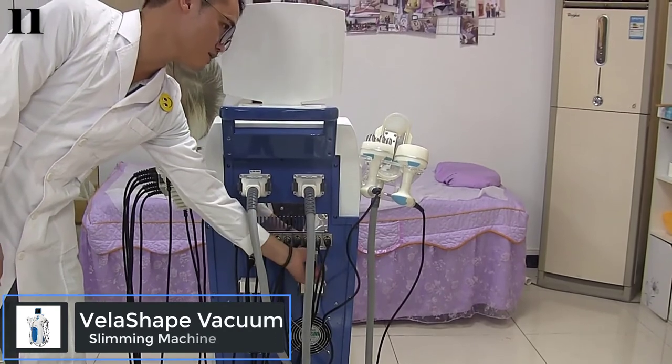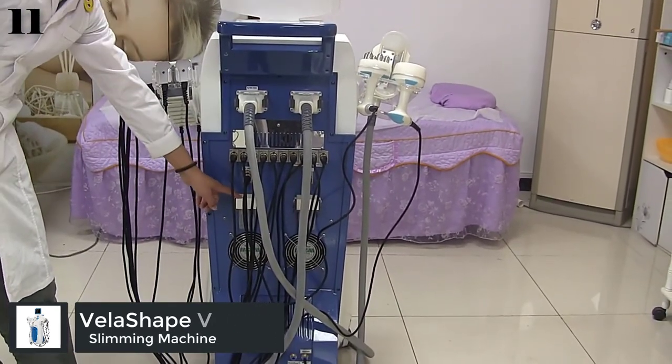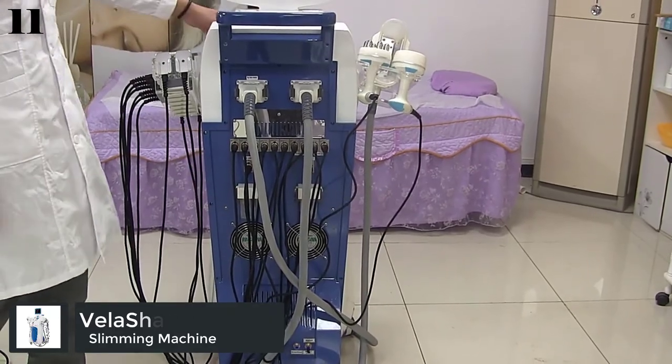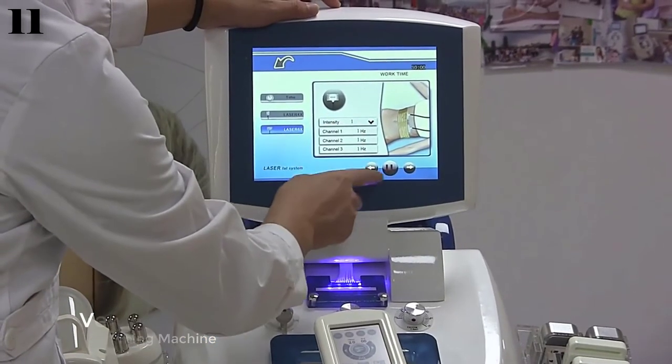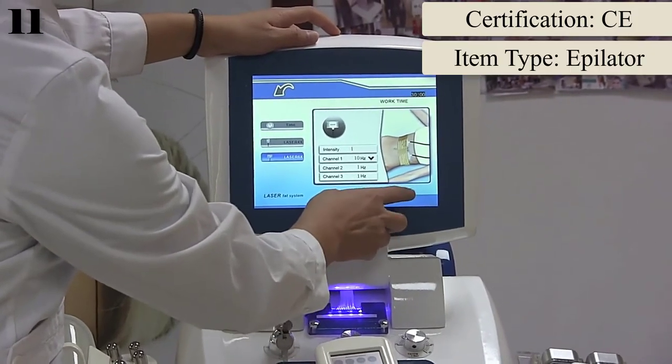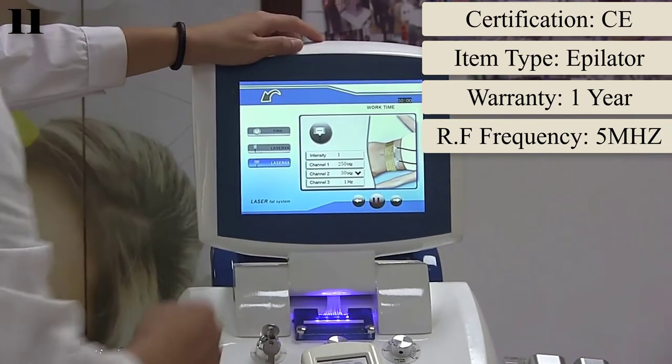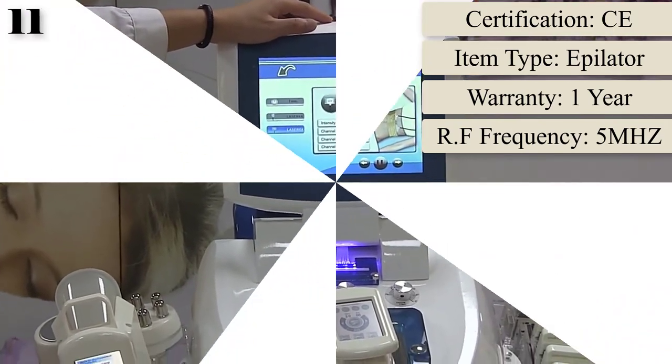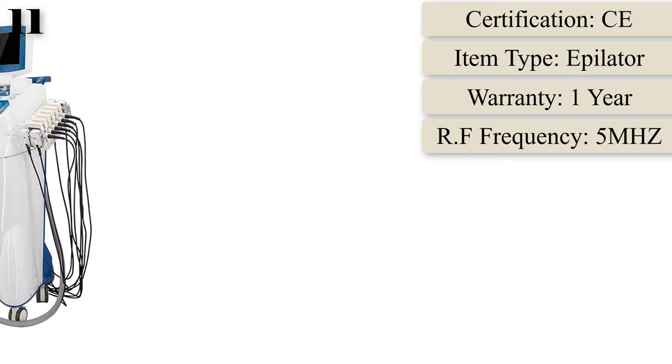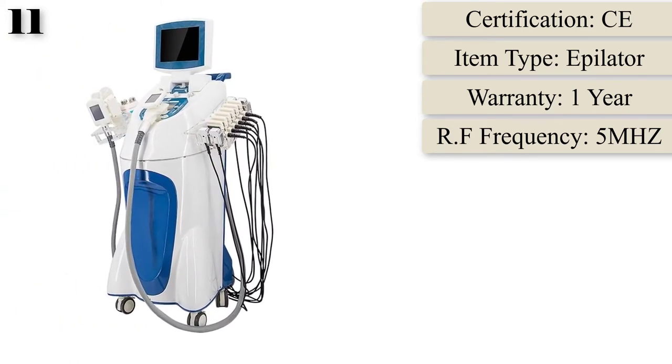Number 11: VelaShape vacuum roller machine vacuum body anti-cellulite body slimming skin tightening cavitation beauty spa massager V9. VelaShape uses vacuum technology to manipulate your skin while infrared light and bipolar radio frequency energies gently heat cells and surrounding tissue. Over the course of your treatments, you will notice a reduction in both circumference and in the appearance of cellulite in the treated areas.